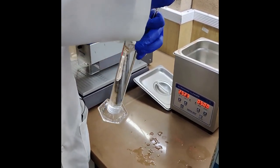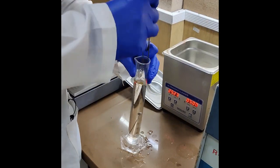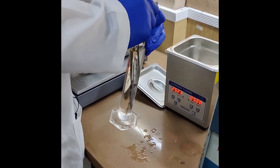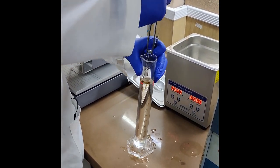Alternatively, you can also decant the solution very carefully and then remove the syringe from the measuring cylinder.